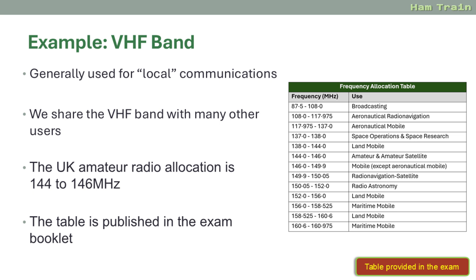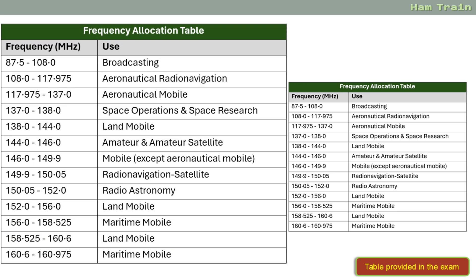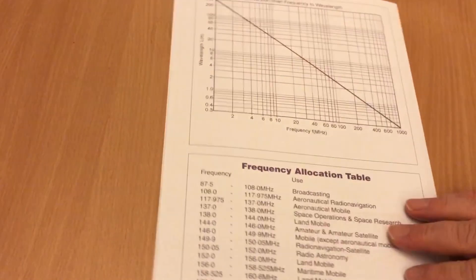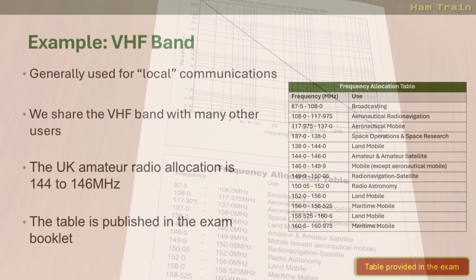Let's look at the VHF band. VHF is generally used for local communications. The table on the screen will be supplied in your exam, so you're not expected to remember it, but you will need to understand it. We are sharing the band with many other users: broadcasters, aeronautical, space, land mobile, radio astronomy and maritime mobile. Our allocation is 144 to 146 MHz, which is allocated to Amateur and Amateur Satellite. The frequency allocation table is available in the exam booklet.